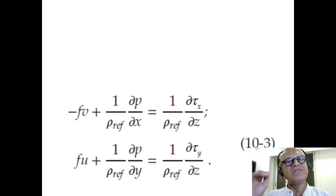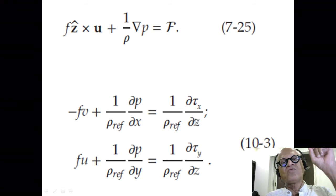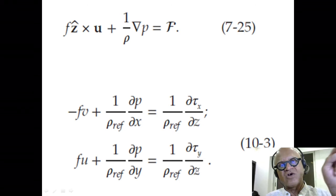Converting the vector equation into component forms: minus fv plus 1 over ρ_ref dp/dx equals 1 over ρ_ref dτ_x/dz—this shows how zonal wind stress penetrates the ocean. Similarly, fu plus 1 over ρ_ref dp/dy equals 1 over ρ_ref dτ_y/dz, representing meridional wind stress forcing the ocean in its friction layer.